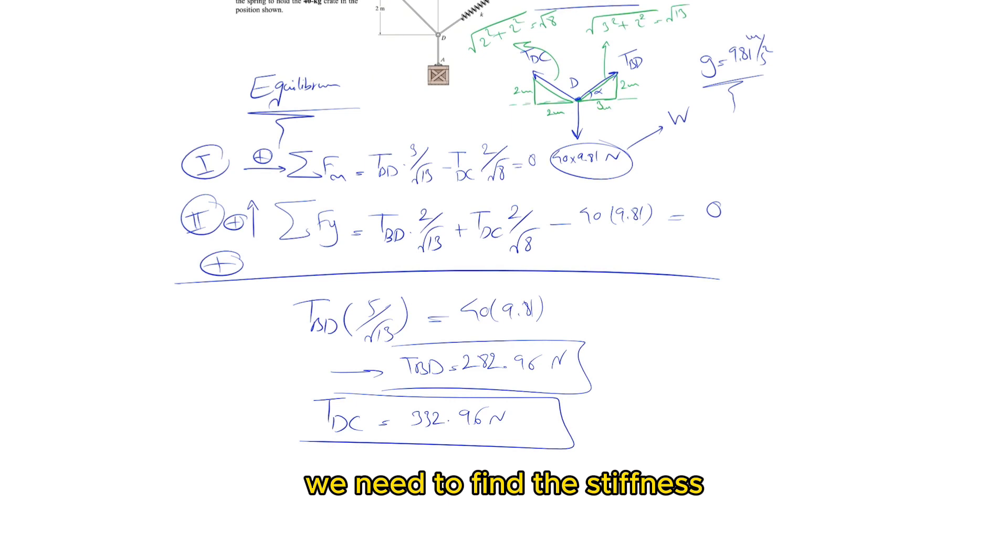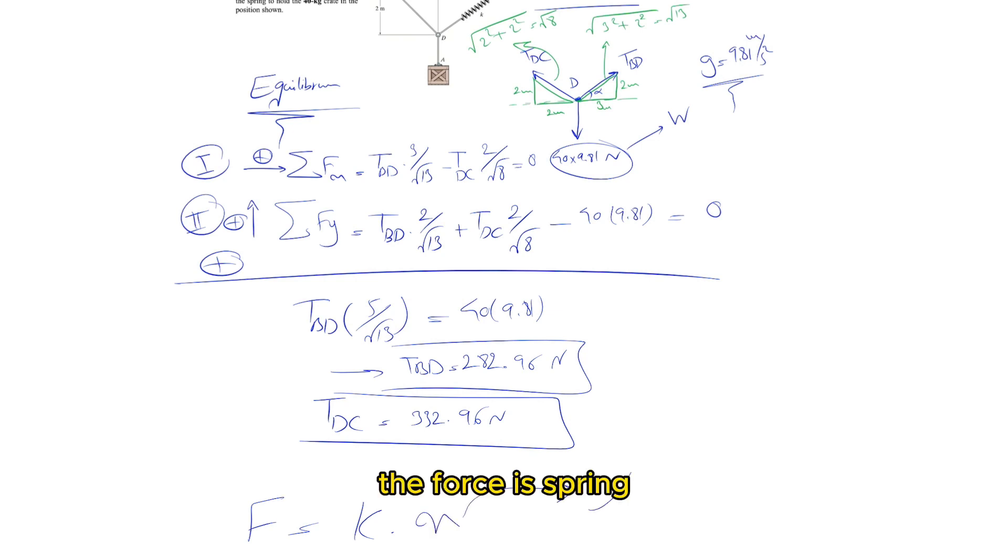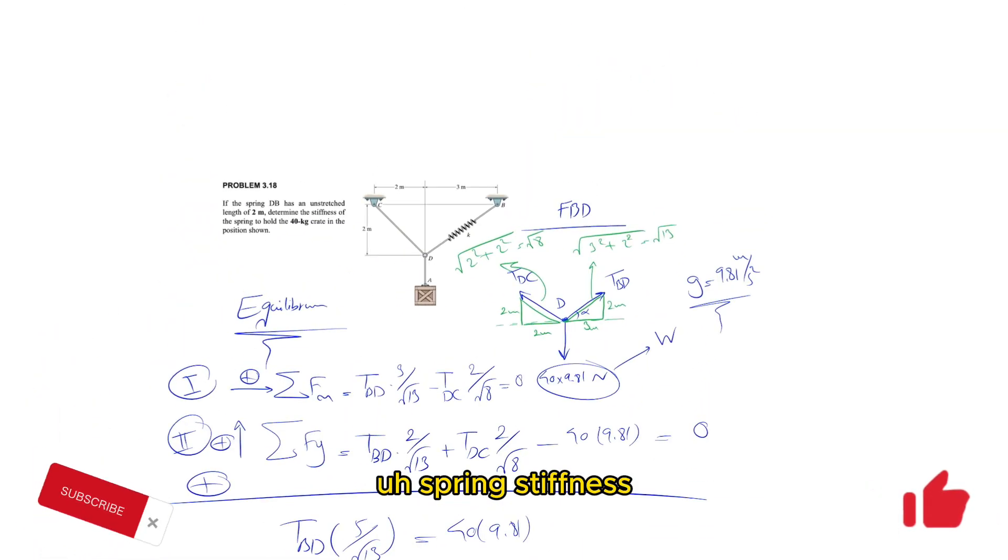We need to find the stiffness of the spring. For a spring, the force equals k times x, where x is the difference in the length of the spring, and k is a constant that represents the spring stiffness.